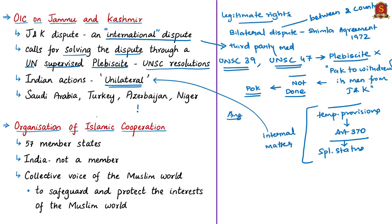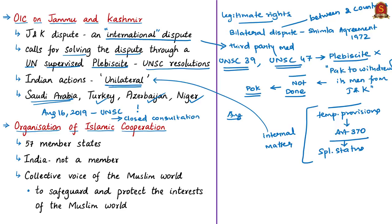The news article mentions that in the recent statement by the contact group, Saudi Arabia joined three more countries — Turkey, Azerbaijan and Niger — to support the OIC and Pakistan stand. Turkey is the only country to raise Kashmir at UN platforms in favor of Pakistan. On August 16, 2019, the UN Security Council held a closed consultation on the India-Pakistan question, at the request of Pakistan and at the instance of China.